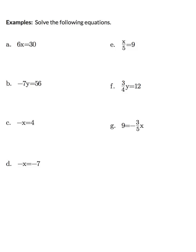In example A, we have six times a number equals thirty. You can probably do this in your head and get x equals five. But how do we go from 6x = 30 to x = 5? We divide both sides by six. On the left side the sixes cancel, leaving just x, and on the right side thirty divided by six is five.